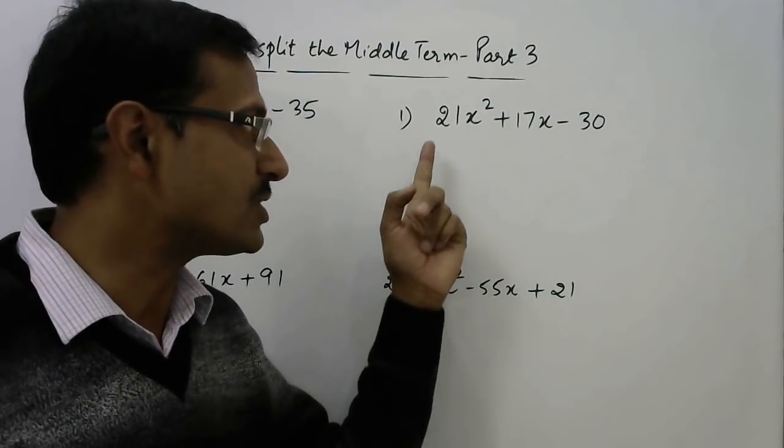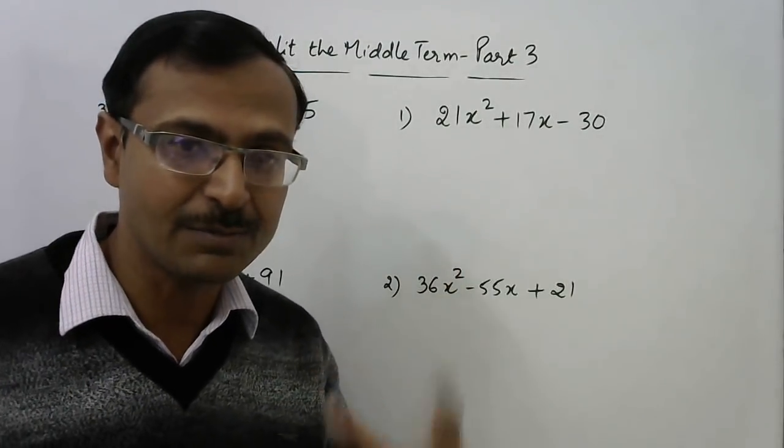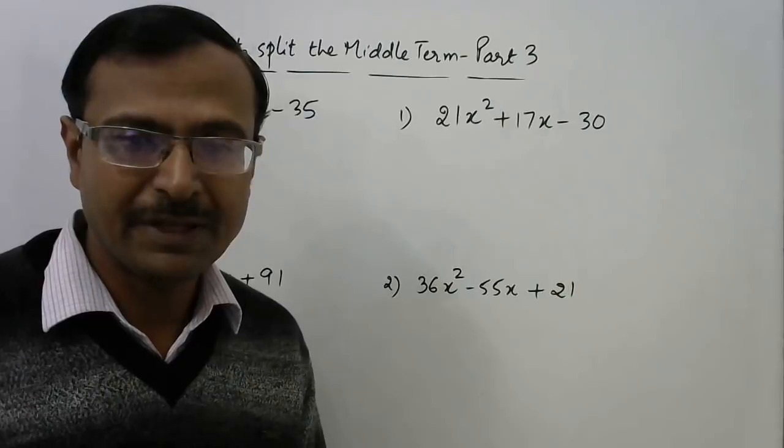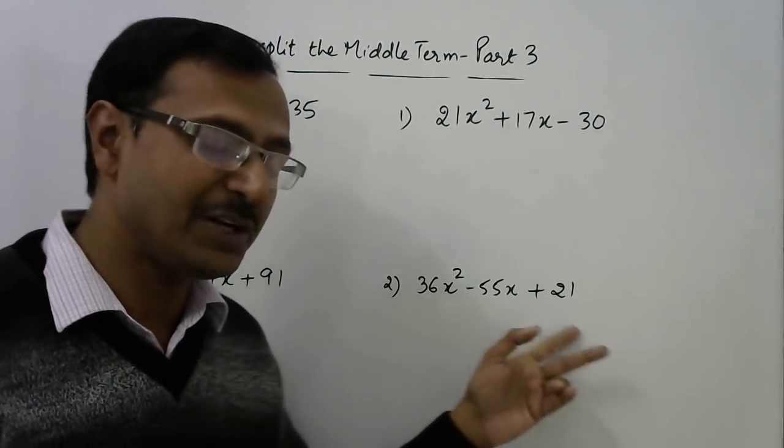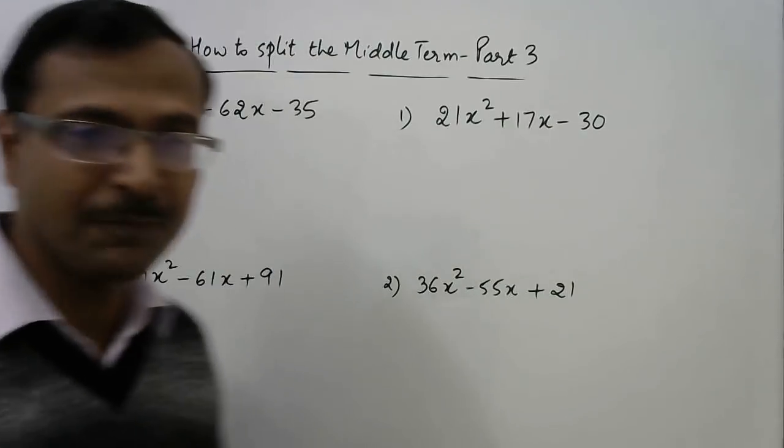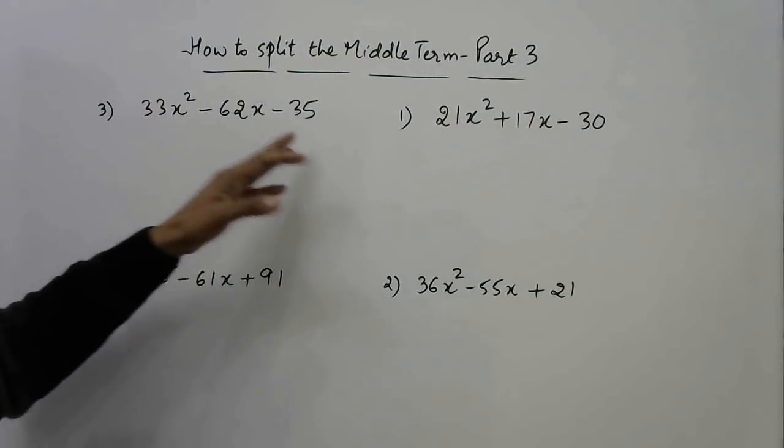Now see the coefficients in the first question: 21, 17, 30, large numbers and normal method which is taught at school level will not help you here. So 36, 55, 21, another complicated problem. Followed by 33, 62, 35, lot of questions in which the coefficients are above 30.